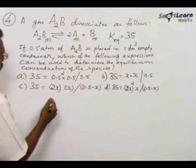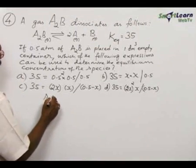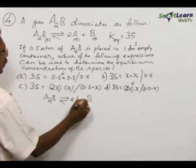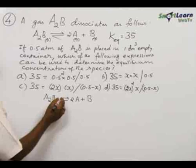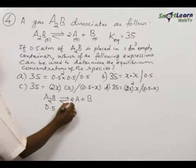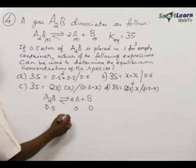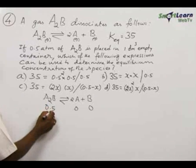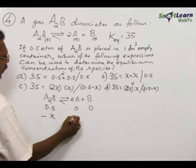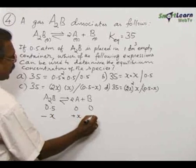In the equation A₂B dissociates into 2A plus B. As per the problem we have taken 0.5 initially, and here is 0, 0. Out of 0.5, imagine x react, therefore minus x, then here it is plus x and plus x.